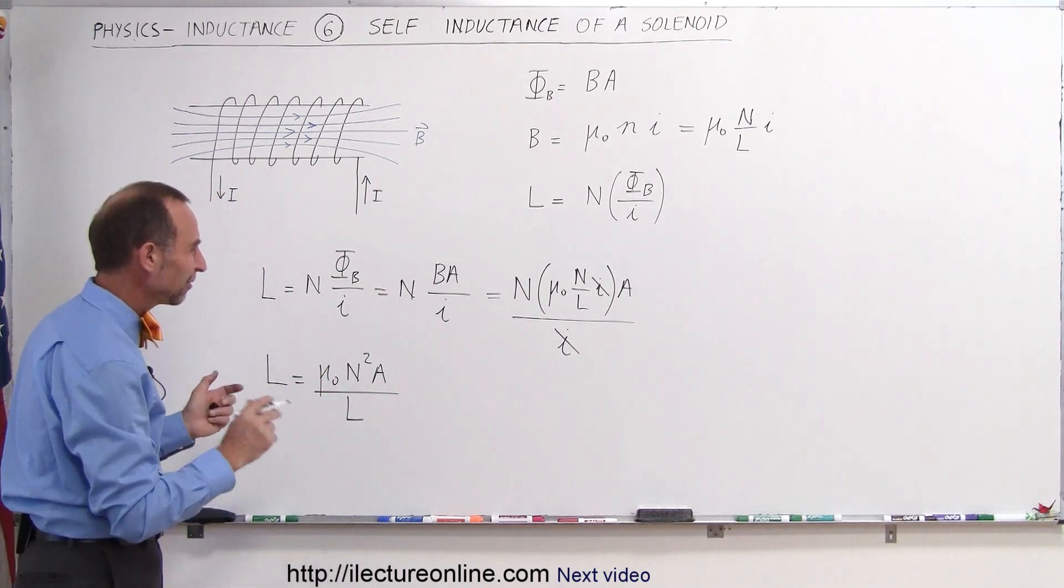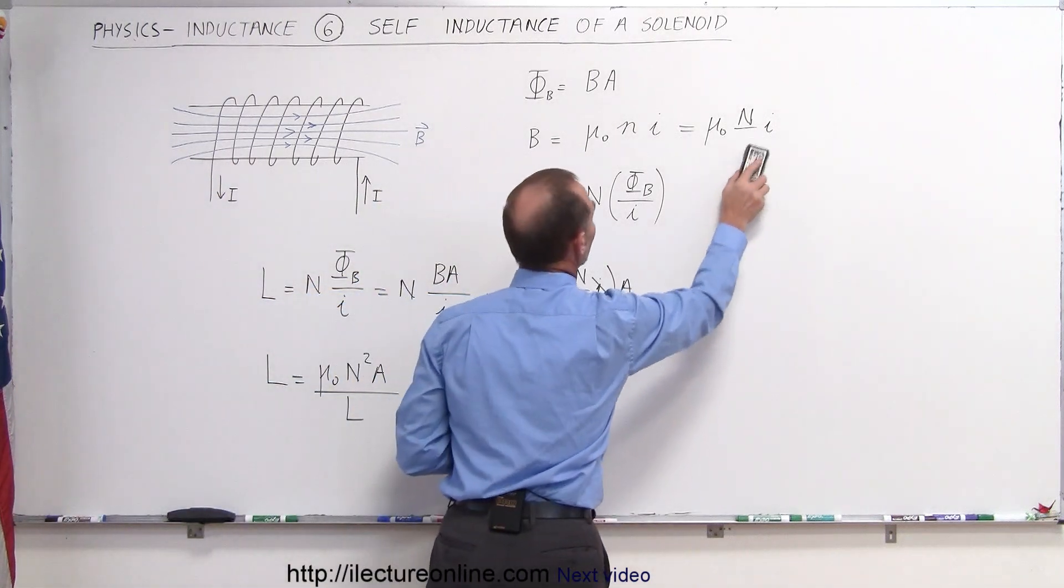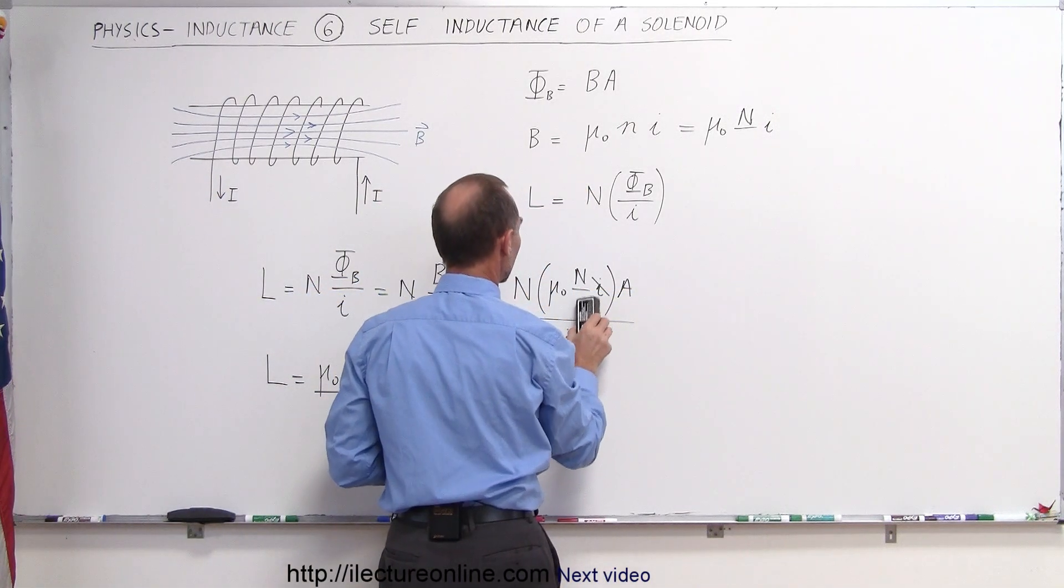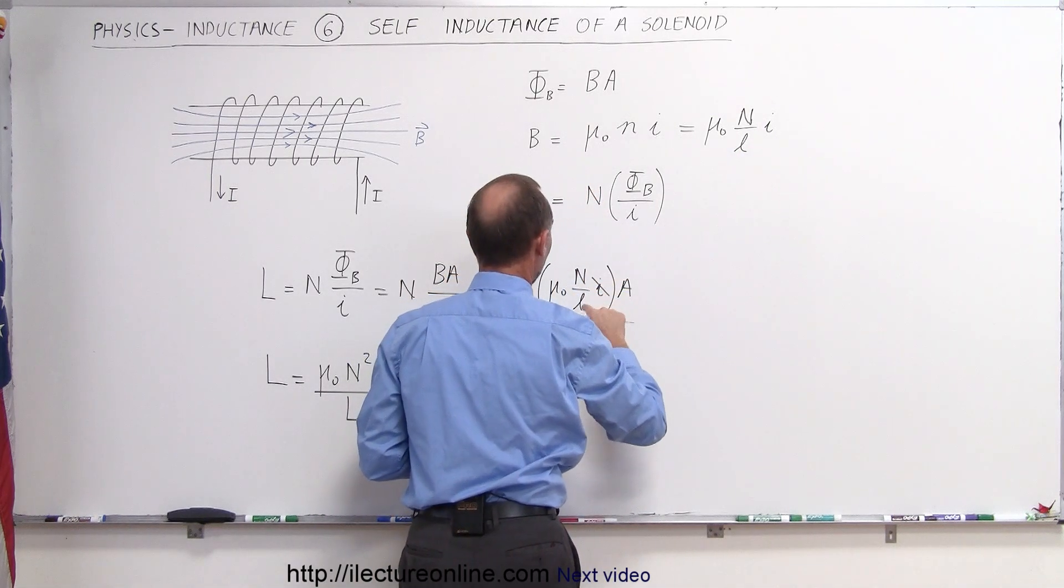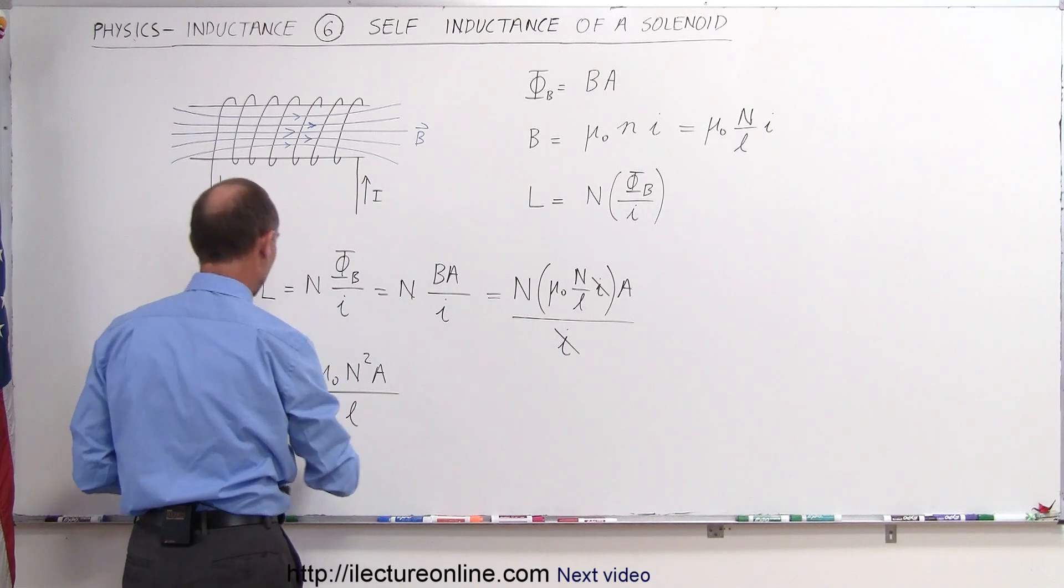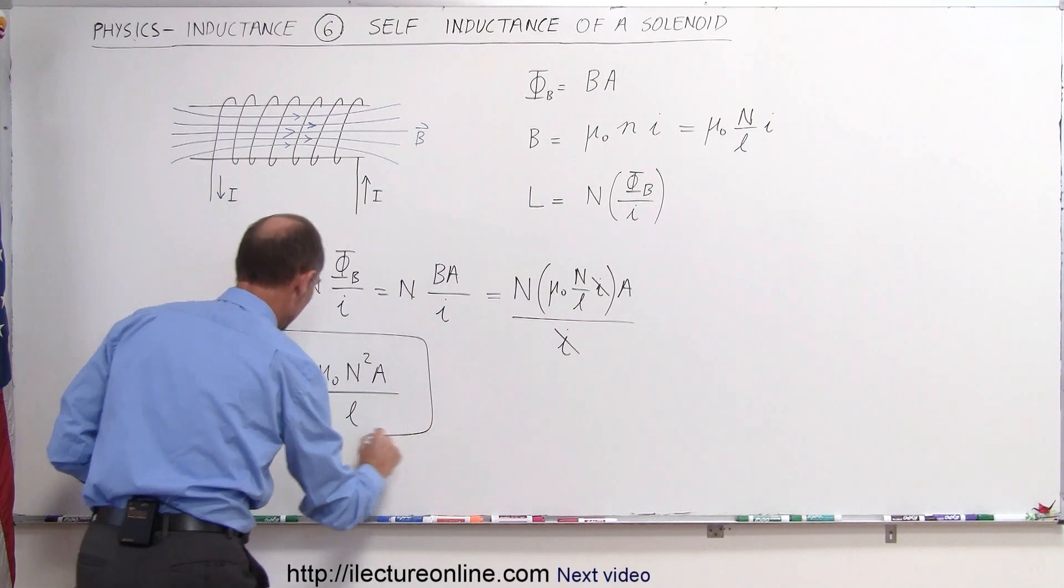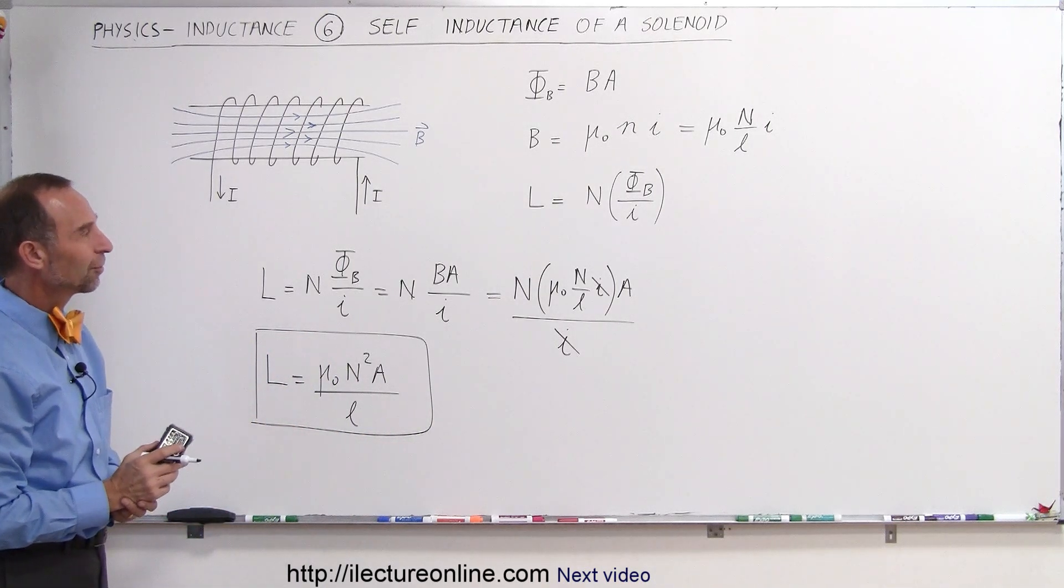Now, just so that we don't have the same L's in there, what I probably should do is turn the big L into a small L, so that we don't have the same variable. So let's just define the length of the solenoid by the small L, L like that, so we don't get the two confused. And there we go. That's the self-inductance of a solenoid.